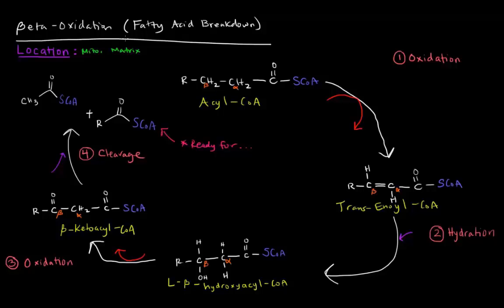This process — beta oxidation — is only four steps, the first being an oxidation step. In this first oxidation step, we're taking an acyl-CoA and turning it into a trans-enoyl-CoA. We made a double bond here between the alpha and beta carbon, so we lost two of those hydrogens. Losing hydrogens is oxidation. So this acyl-CoA was oxidized to this trans-enoyl-CoA.